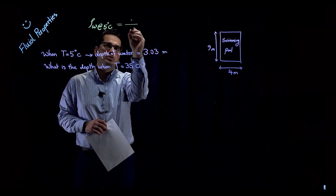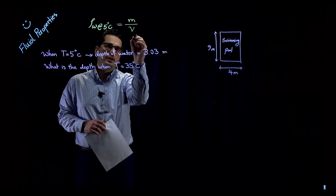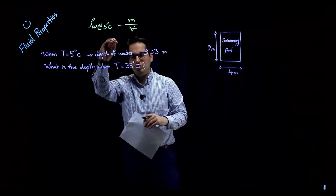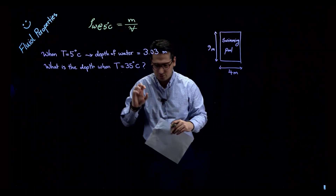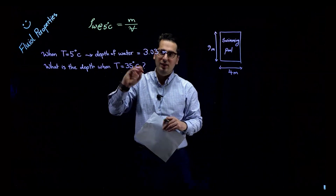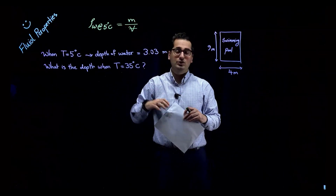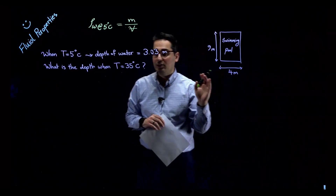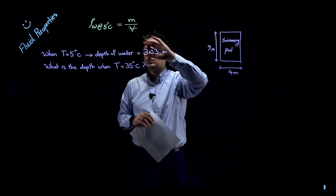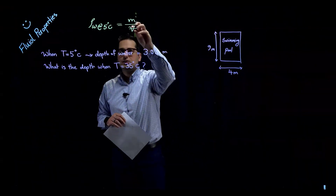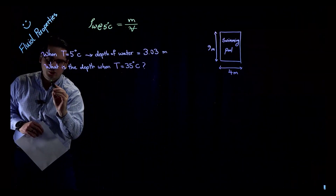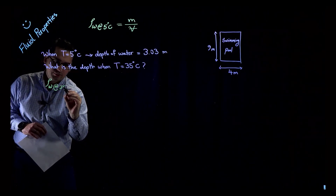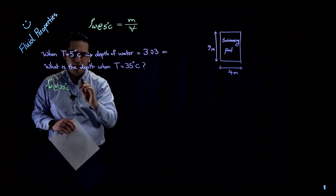You can solve this problem by understanding the principles of density. Density equals mass of water divided by volume. When temperature increases, the volume of water increases, but mass does not change — assuming no evaporation and no leakage. I can find the density of water at both 5 degrees and 35 degrees Celsius using tables in the textbook.